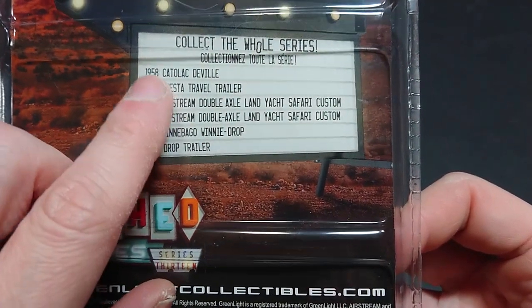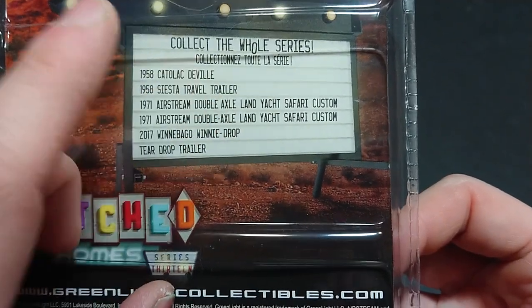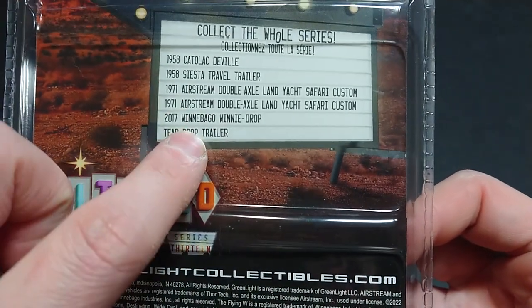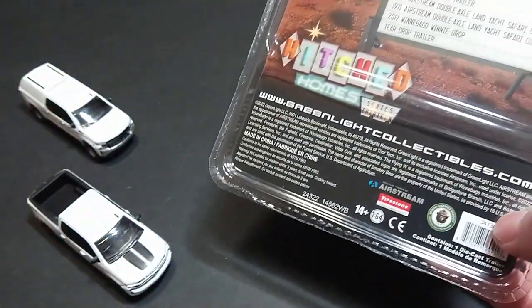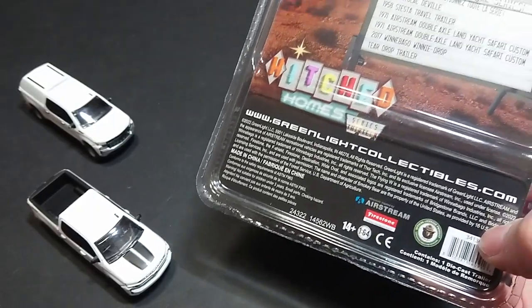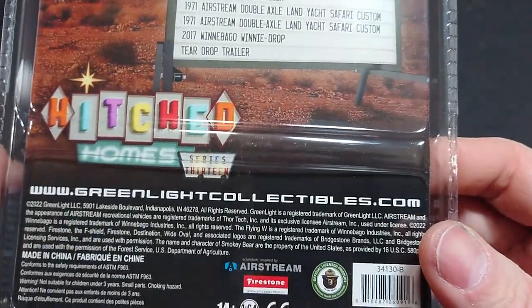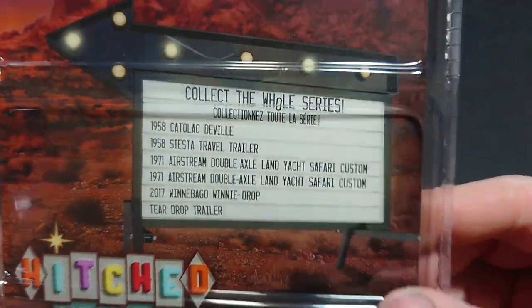It's called the Land Yacht Safari, but it's not the custom so it has a little bit of a different name but it's similar in year. It's that long silver one with the many windows, often has the oily fingerprints on the plastic. Teardrop trailer I've seen but I didn't see it with this one. And the Winnebago I believe they've had it in the last three series, so if you happen to love Winnebago's and you happen to miss it, here it is again because Green Light will use the same casting and materials continuously.